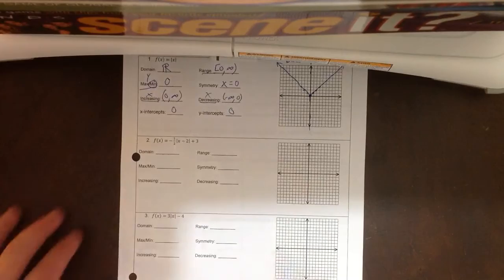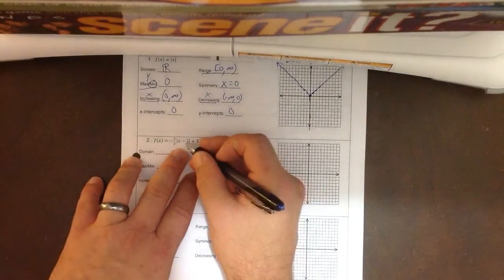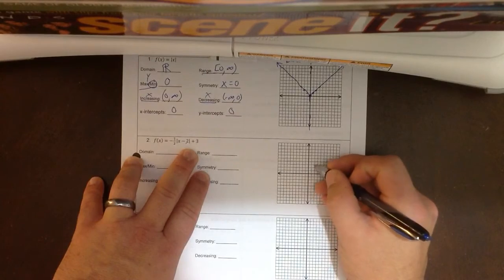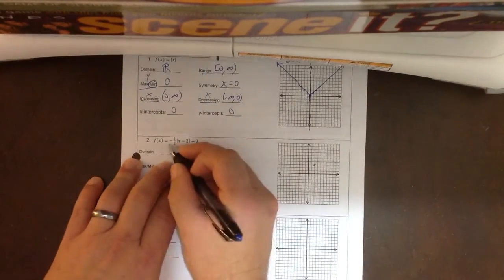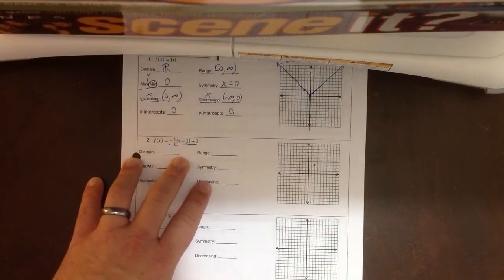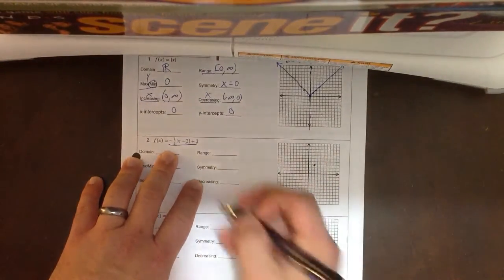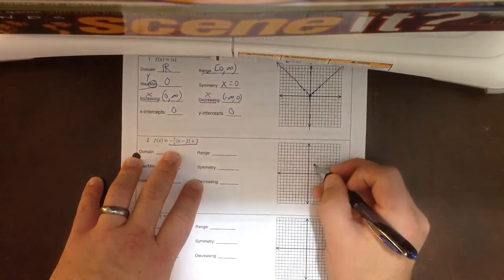Alright, number 2. My vertex is going to shift right 2 and up 3, so 1, 2, 3. And if you ever struggle with this, put this in the calculator. See what the calculator tells us. The negative tells me it's going to open down. It reflects over the x axis. And the 1 half is my new slope, so down 1 over 2.